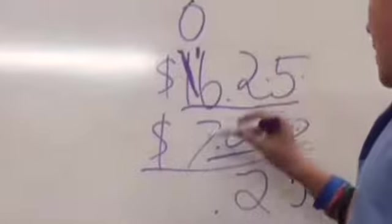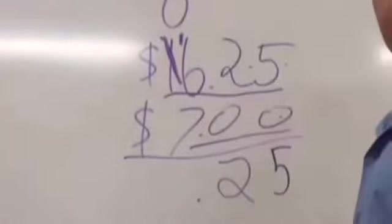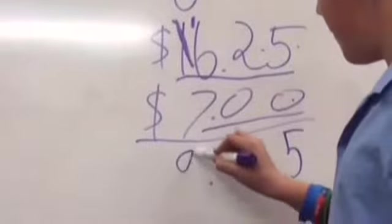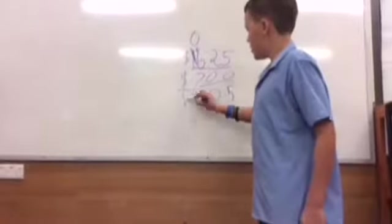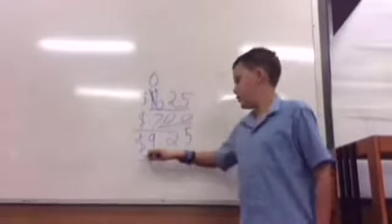So 7, 16 minus 7 equals 9. So the change that Joti should get is $9.25.